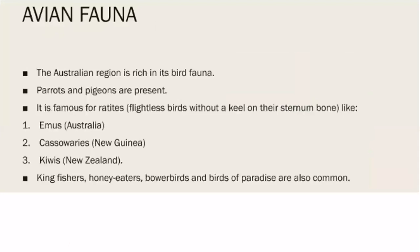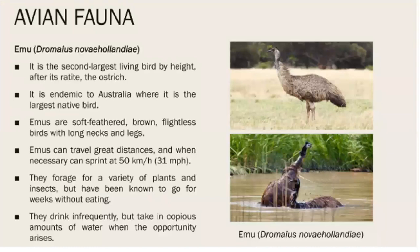Regarding avian fauna, the Australian region is called 'Bird of Paradise' due to the huge diversity of birds. Parrots, pigeons, emu, cassowary, kiwi, kingfisher, honeyeater, bowerbird, and bird of paradise are all common in this region.